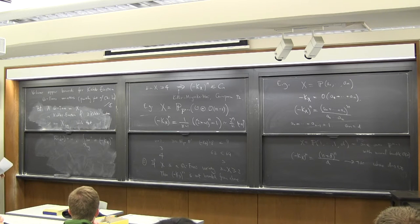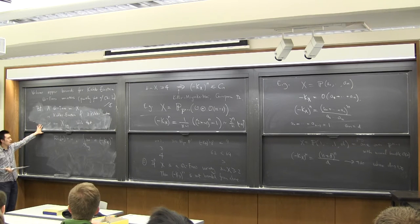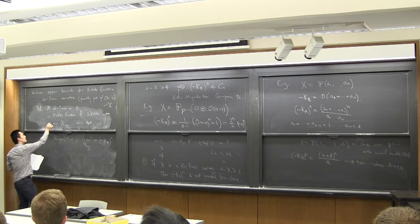This is the original Kähler-Einstein condition on a smooth manifold, extended to the singular setting. This is also sometimes called a weak Kähler-Einstein metric, but in this talk I will just stick to Kähler-Einstein metric.